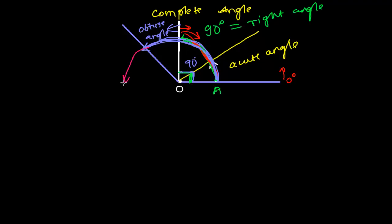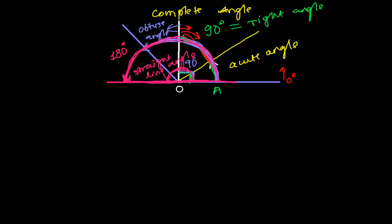Let me draw a straight line to connect back to my initial line. From point A, I complete all those points and come back to this straight line. The angle I have covered — if you measure with a protractor — will be 180 degrees. The left side and right side form exactly a straight line. Since this forms a straight line, we name this angle the straight line angle. This whole angle is called a straight line angle.